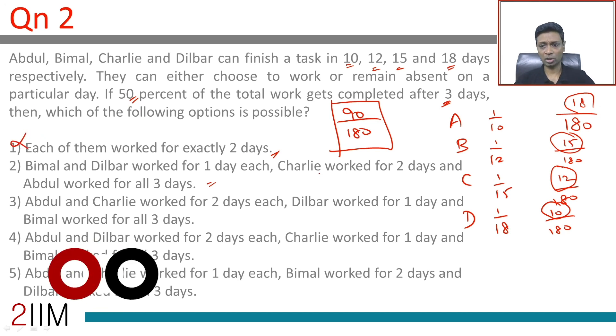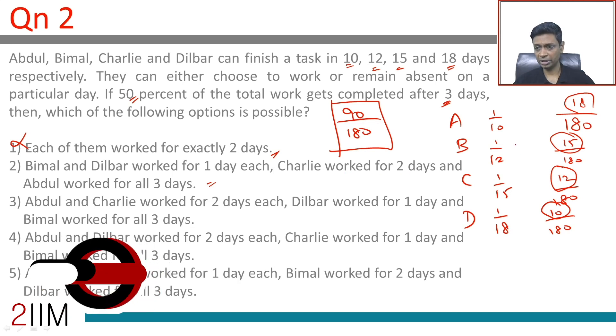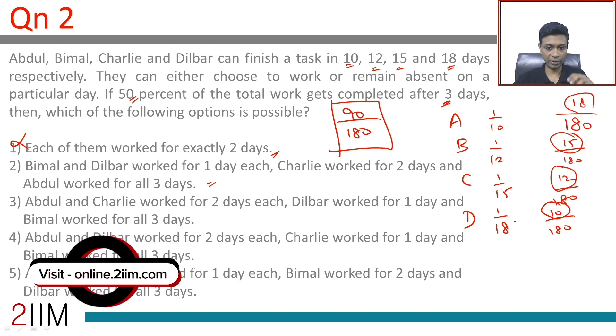Bimal and Dilbar worked for 1 day each. So B and D for 1 day each, that is 25. Charlie worked for 2 days, plus 24, 49. 49 plus 54 doesn't add up to 90, if you are looking to add up to 90, remember that.